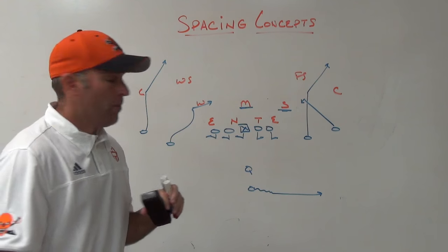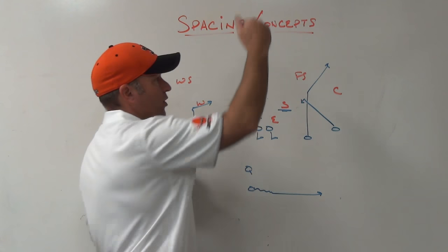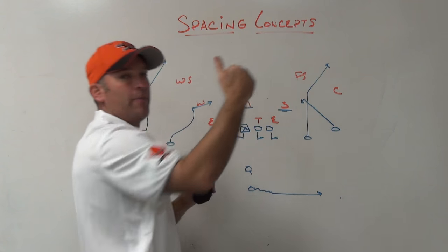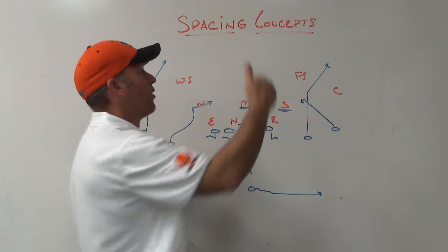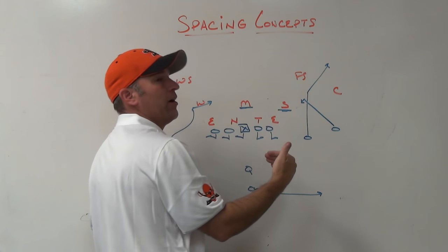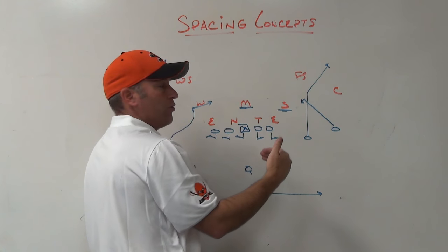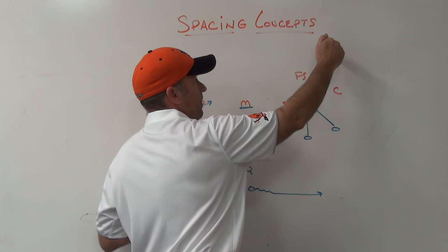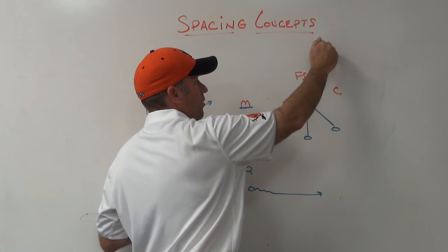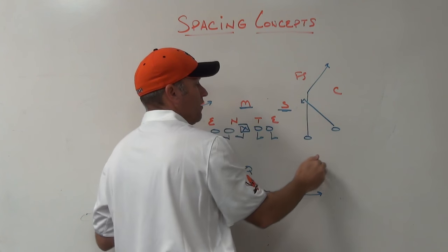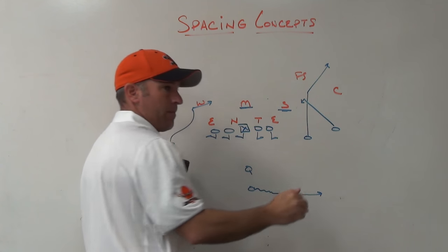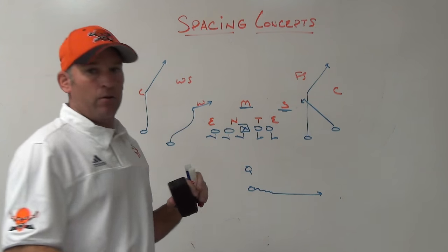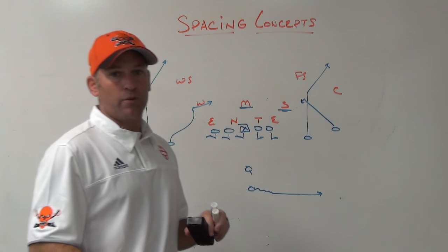When we have a vertical component in the passing game, we read it from top down. We will normally read this play corner, snag, flat when we have a vertical component.